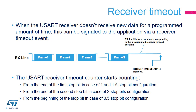The USART supports a receiver timeout feature. When the USART doesn't receive new data for a programmed amount of time, a receiver timeout event is signaled and an interrupt is generated if enabled. The receiver timeout counter starts counting from the end of the first stop bit in the case of 1 and 1.5 stop bit configuration, from the end of the second stop bit in the case of 2 stop bit configuration, and from the beginning of the stop bit in the case of 0.5 stop bit configuration.